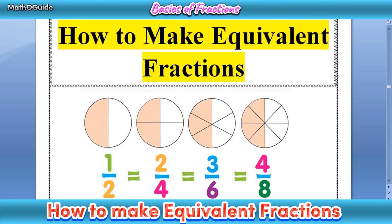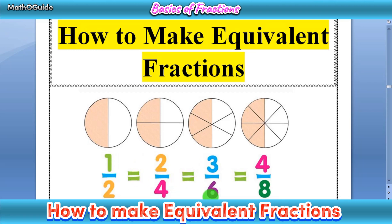Hi guys, welcome to my YouTube channel. Today we are going to discuss how to make equivalent fractions. First of all, we recall what equivalent fractions are. We have an example: 1 over 2 equals 2 over 4, equals 3 over 6, equals 4 over 8. Equivalent fractions are fractions that have different numerators and denominators but equal a portion of the whole.